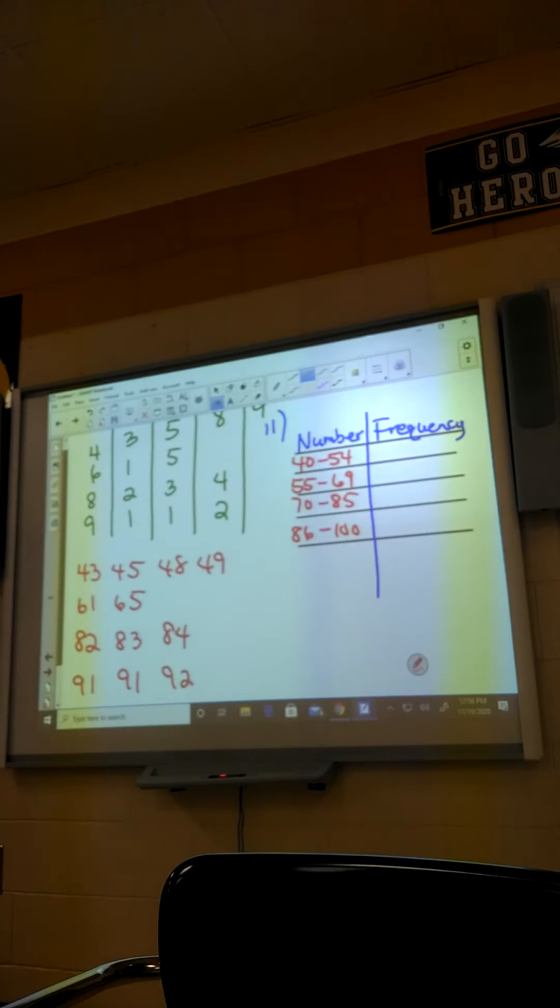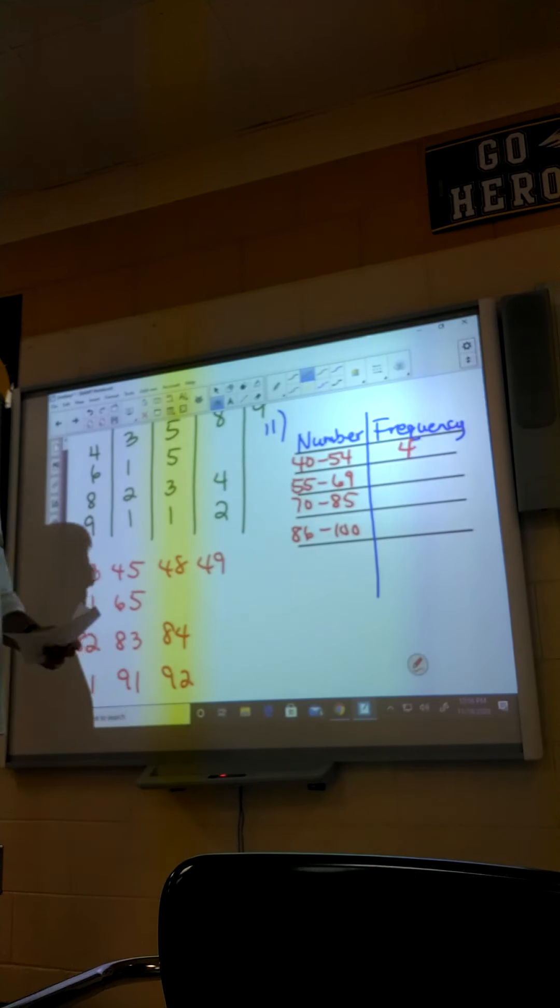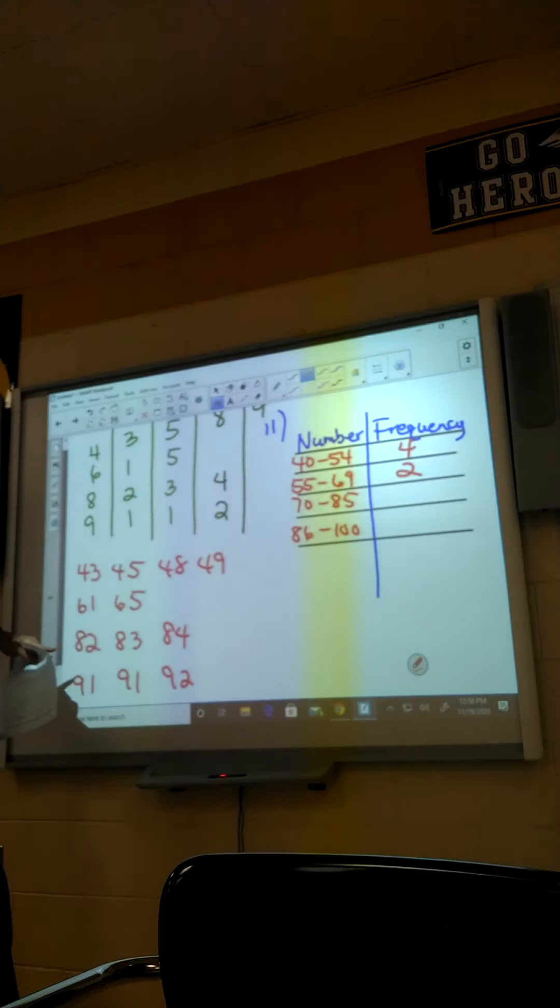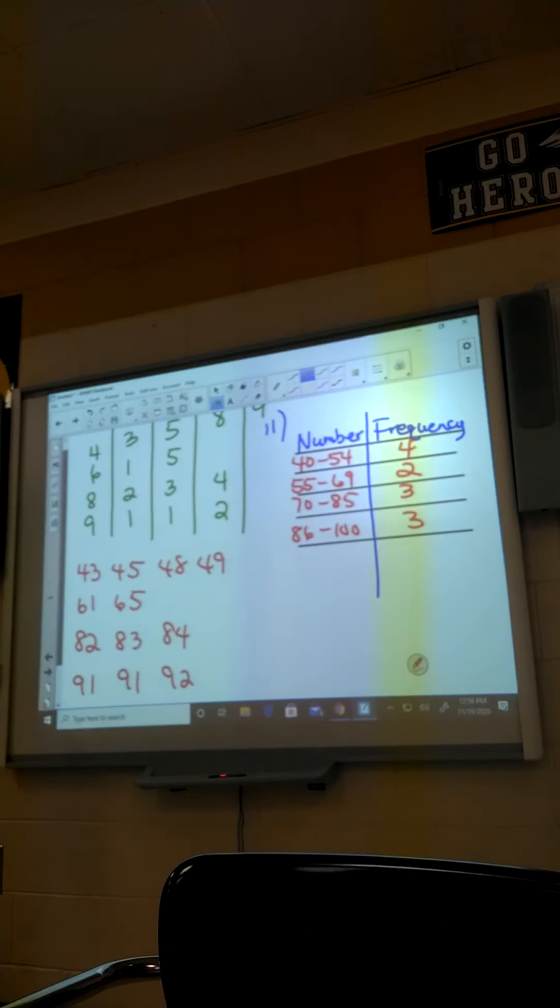All right, so how many numbers are 40 through 54? That's four. Frequency is how many times it occurs. 55 through 69 is two. 70 through 85 is three. And then 86 through 100 is three. So this is our frequency chart, frequency table right here.